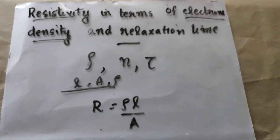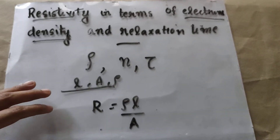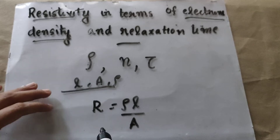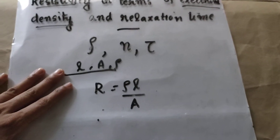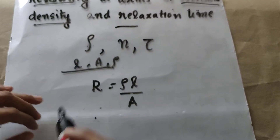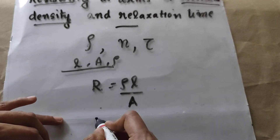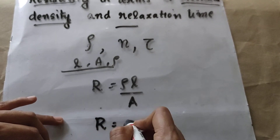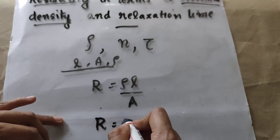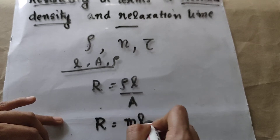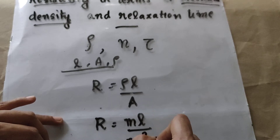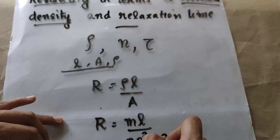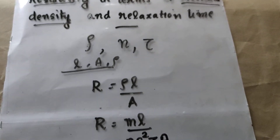In our last class, when we deduced Ohm's law, we obtained this equation for resistance: R = M × L / (N × e² × tau × A), where tau is the relaxation time.